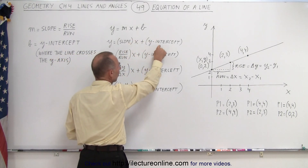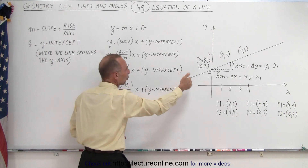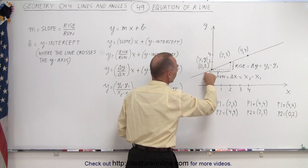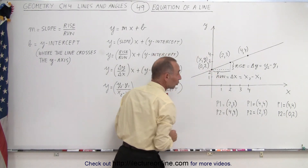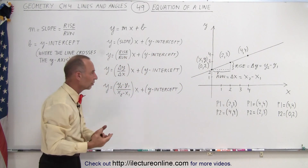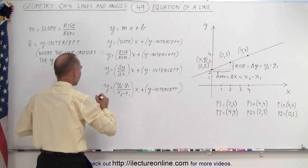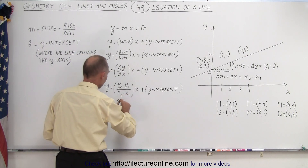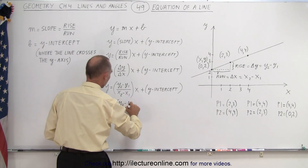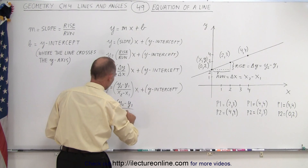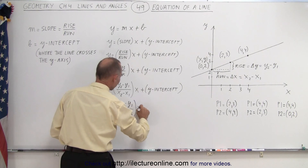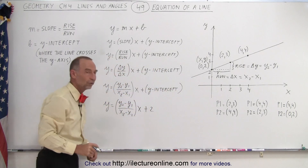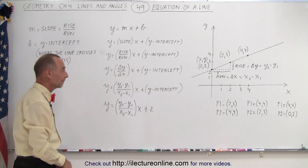And then plus b — b is what we call the y-intercept, which is where the line crosses the y-axis. In this case, you can see that the line crosses the y-axis when y is equal to 2, so that would be the y-intercept. So we can write that y equals (y2 minus y1 over x2 minus x1) times x plus 2. That 2 is the y-intercept, and that's always easy to find.